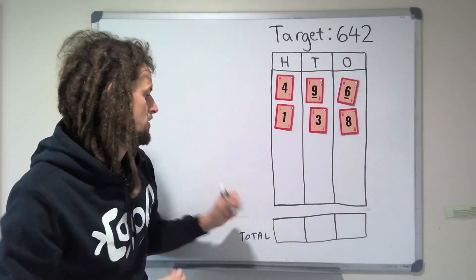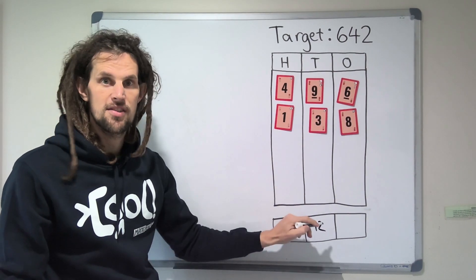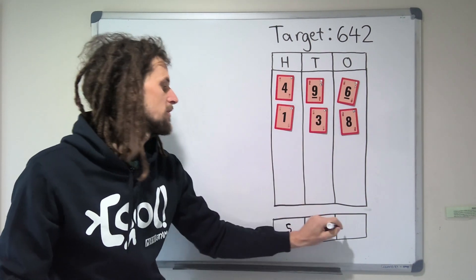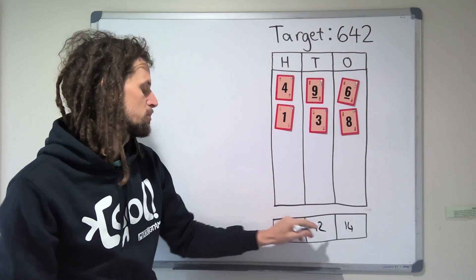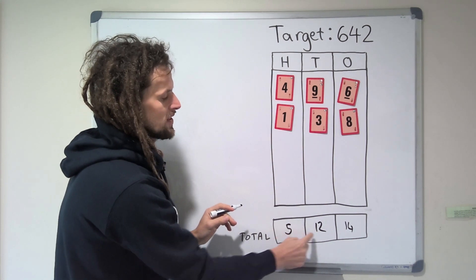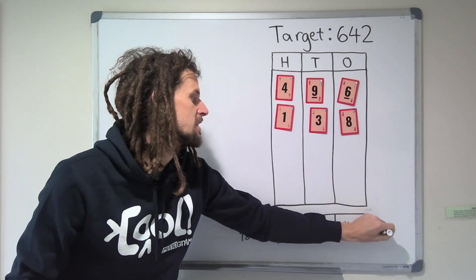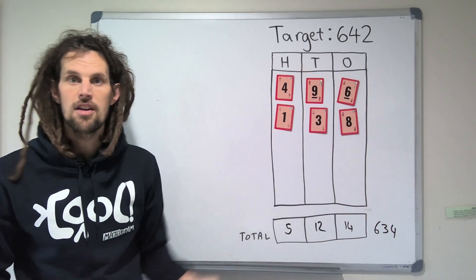So if we write this down at the end, we've got 5 hundreds, we've got 12 tens, which is like 620, and we've got 14 ones. And so we put that all together, we end up with, that's 620, 634. So our total here is pretty close, 634.